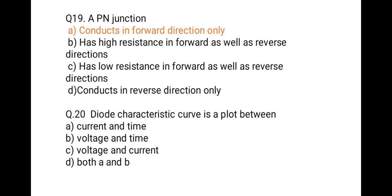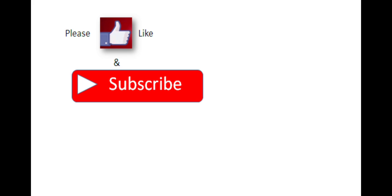The last question is: the diode characteristics curve is plotted between — and the correct option is voltage and current. A diode has an IV characteristic, so option C is correct. Please like and subscribe.